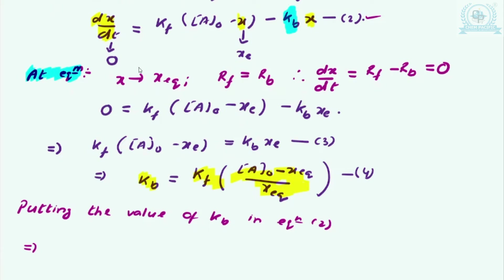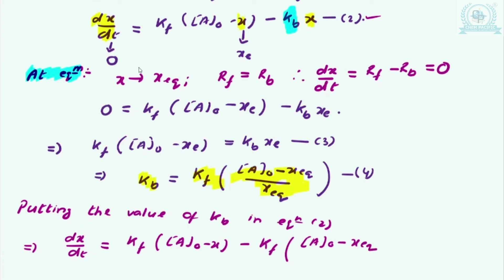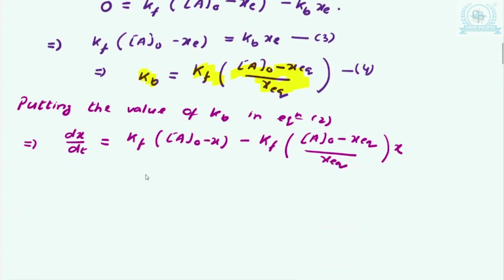After substituting the value of kb into equation 2, it turns out that dx/dt equals kf times (A0 minus x) minus kb times x, where kb has now been replaced by its expression from equation 3. If you understand the value of kb logically, you can remember this result.